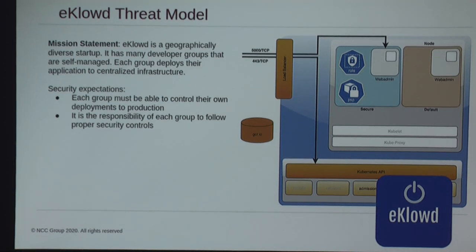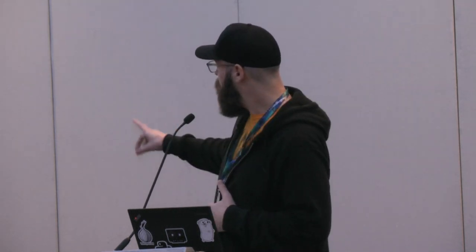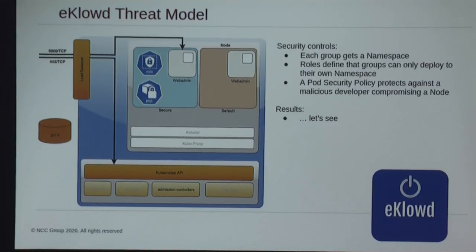The next case study involves more of a demo. This is eCloud, a geographically diverse start-up with developer groups in Singapore and Canada. Each developer group can deploy their own code into the Kubernetes cluster. The organization's IT operations sets up the cluster, then grants access to developers to deploy their own code and make their own security choices. They isolate with a namespace — the first example of Kubernetes trying to do multi-tenancy in our case studies, with one development group representing one tenant.